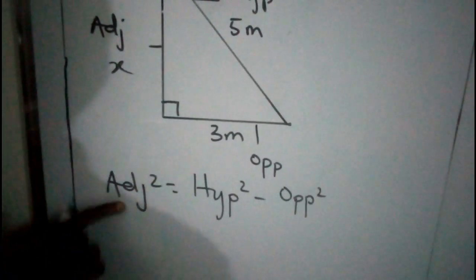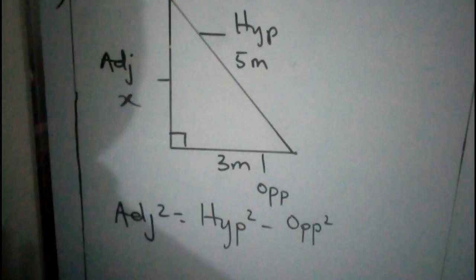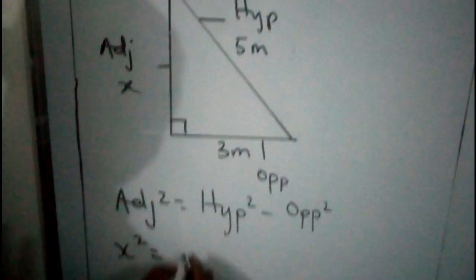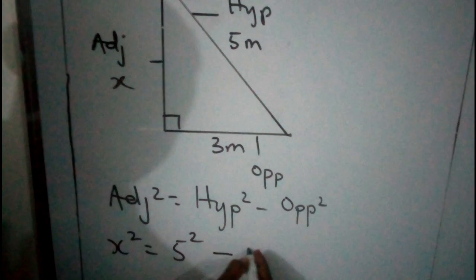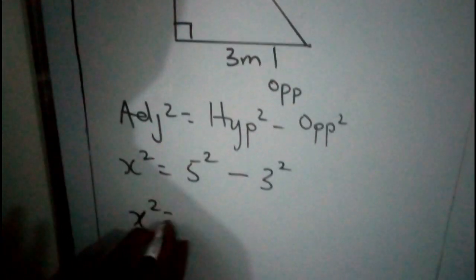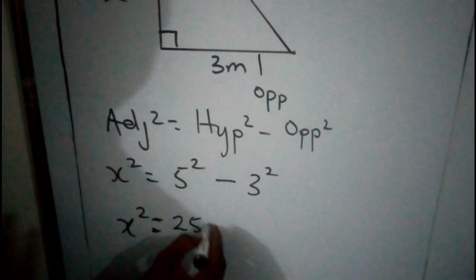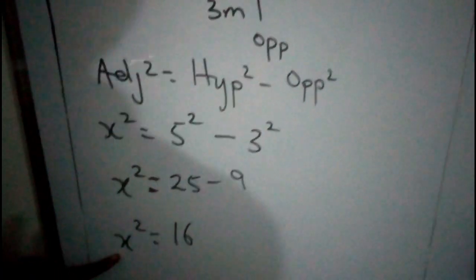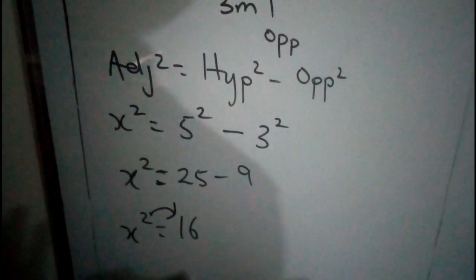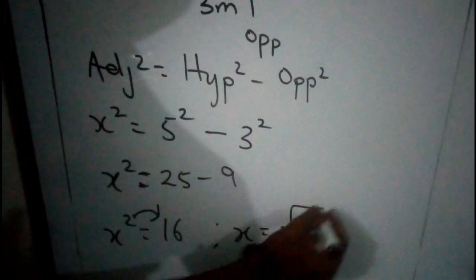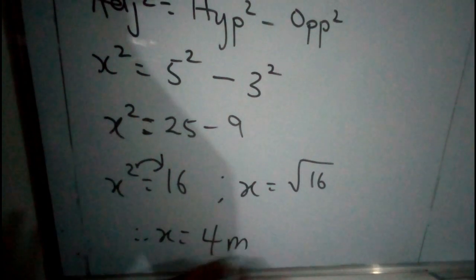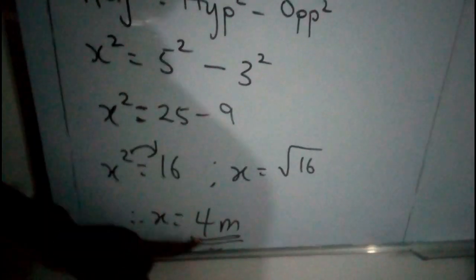Let's substitute. Whenever you see adjacent, put X. Hypotenuse is 5 metres, opposite is 3 metres. So: X squared equals 5 squared minus 3 squared. That gives X squared equals 25 minus 9, which equals 16. We are looking for X, not X squared, so the square crosses the bridge to become square root: X equals the square root of 16, which is 4. Therefore, X equals 4 metres. Take note of the unit — the adjacent or missing side is 4 metres.